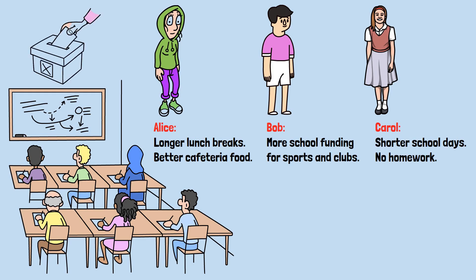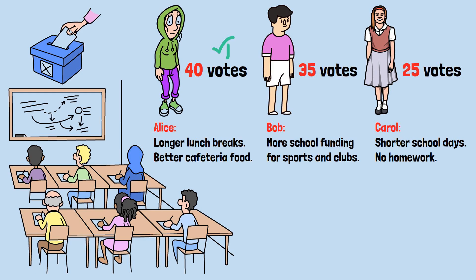100 students vote. Here are the results: Alice gets 40 votes, Bob gets 35 votes, Carol gets 25 votes. Alice wins — she's your class president.